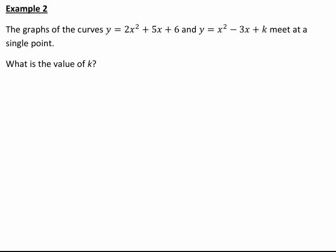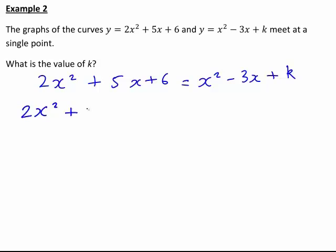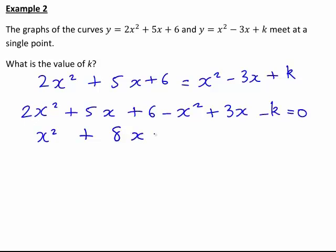Again, if they intersect, they must have some common point with the same x values and y values. We could set the y values equal to each other, which means 2x squared plus 5x plus 6 equals x squared minus 3x plus k. We would rearrange this to get all the terms on the left-hand side and 0 on the right-hand side, giving us 2x squared plus 5x plus 6 minus x squared plus 3x minus k equals 0. Simplifying, collecting like terms, we end up with x squared plus 8x plus 6 minus k equals 0.